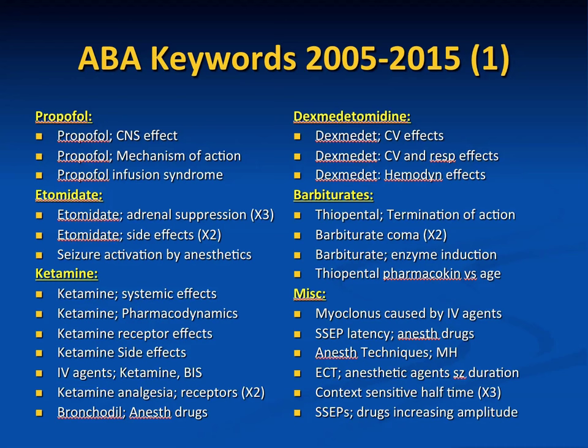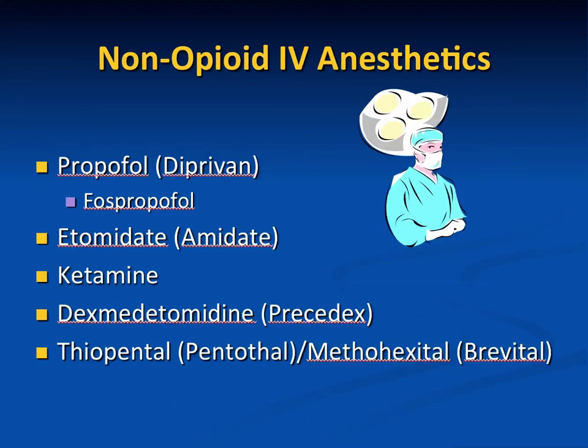We'll focus on these IV anesthetic drugs: propofol first, fospropofol (which came out around 2008), etomidate or Amidate, ketamine, dexmedetomidine or Precedex, and thiopental — another name for Pentothal — and methohexital, or Brevital. These are the non-opioid IV anesthetics we'll be discussing.